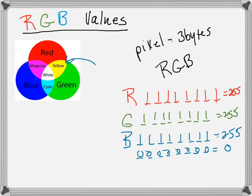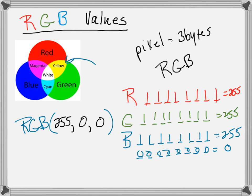In programming you'll often see RGB with parentheses, and then decimal numbers — which is nice for us. That tells the computer to get the binary code, but we just deal with decimal numbers. So RGB(255, 0, 0) means the red is completely turned on and the green and blue are both turned off — so that would be a red color.